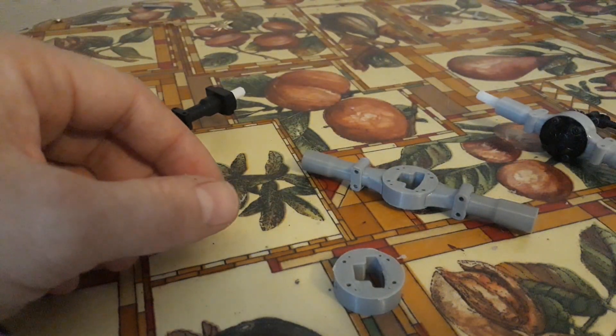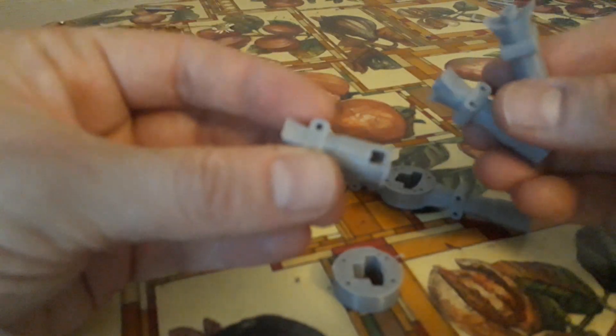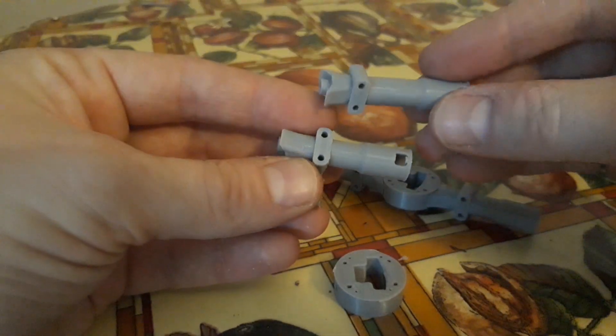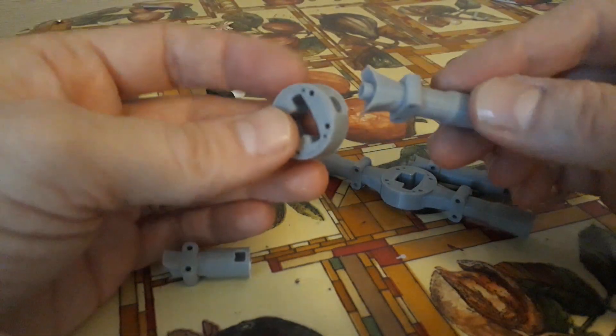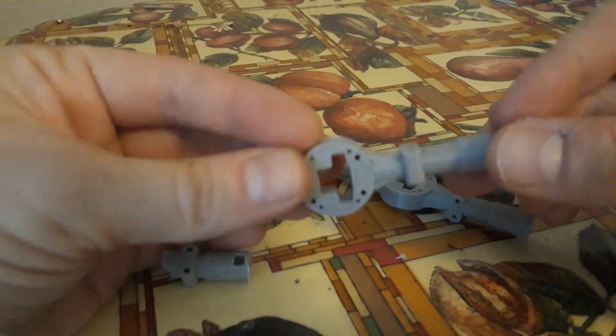And then we've got different length axle tubes. So if we just look at this here. That locates in there. That would then be glued.